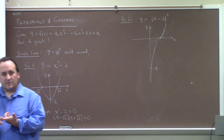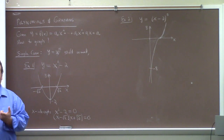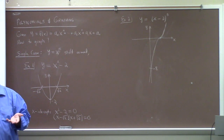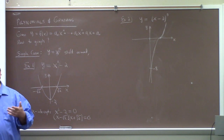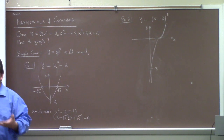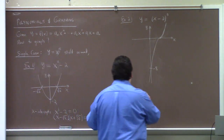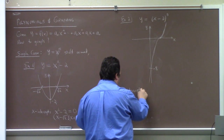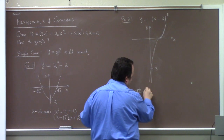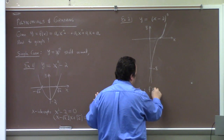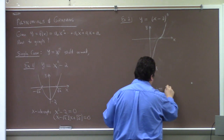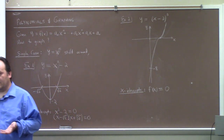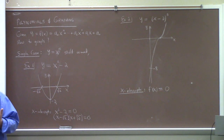My first point is we can do a lot of graphs by moving around y = xⁿ — shifting up, down, left, right — with the transformations we already learned. Moving past that, we want to find x-intercepts and y-intercepts. X-intercepts come from the solutions to f(x) = 0, and the y-intercept is f(0).